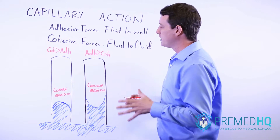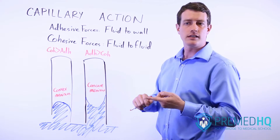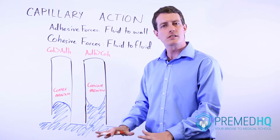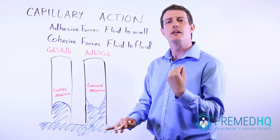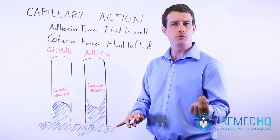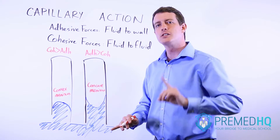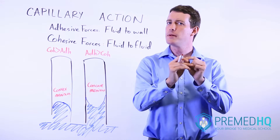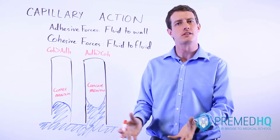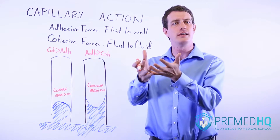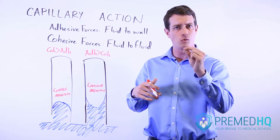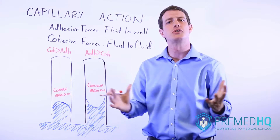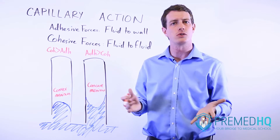Capillary action is at the heart of why water rises up in soil. Water at the lowest level of the soil will be attracted to different soil particles — that's an adhesive force bringing the water up. Then the cohesive forces allow more water to follow it, and that initial water molecule will get bound to the next level up of soil, and it will just continue to rise through the soil.